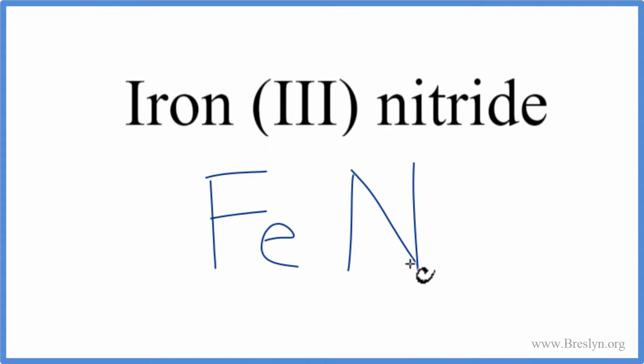When you have a metal and a nonmetal, you have an ionic compound, and you need to consider the charges on the iron and the nitrogen. They tell us right here iron three—iron is a transition metal, so they put a three to tell us that the charge is 3+.